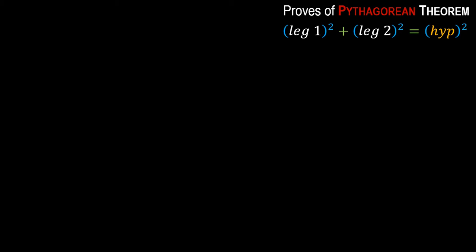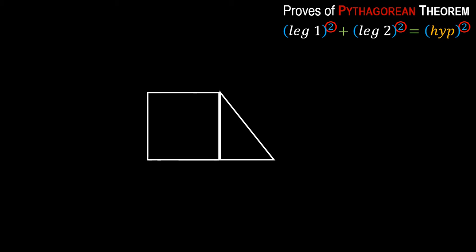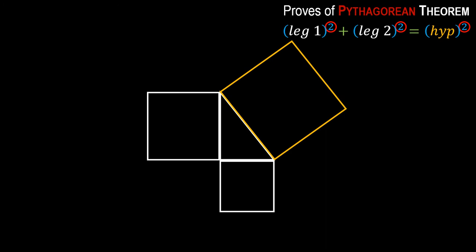The first proof: I am taking a right triangle like this. Since the theorem is about the squares of its sides, I am drawing squares on each side of this triangle. You can see that I have drawn three squares on each of the three sides of this triangle.